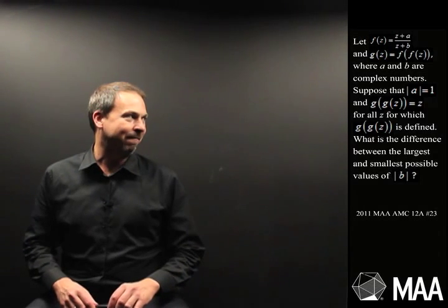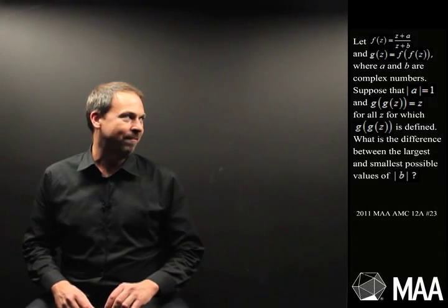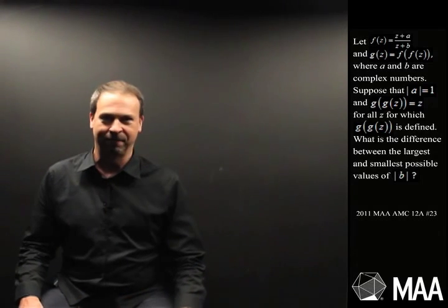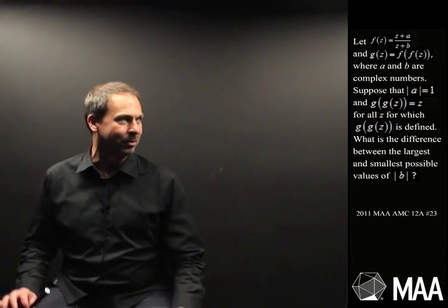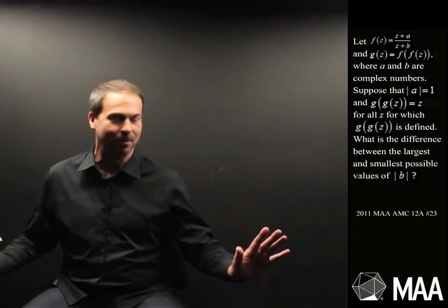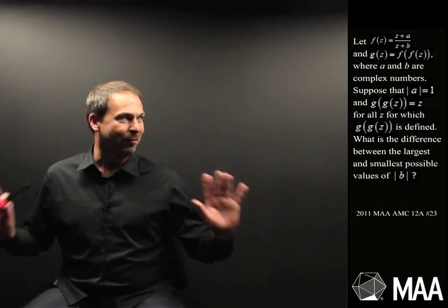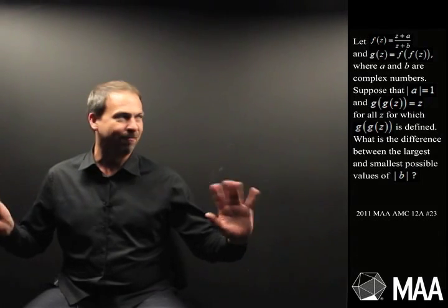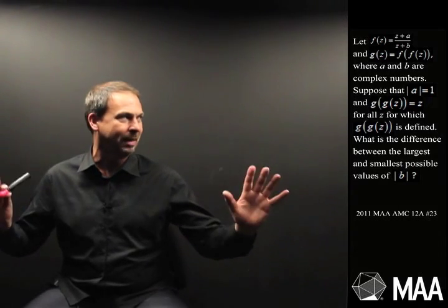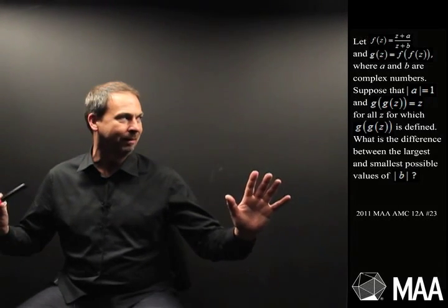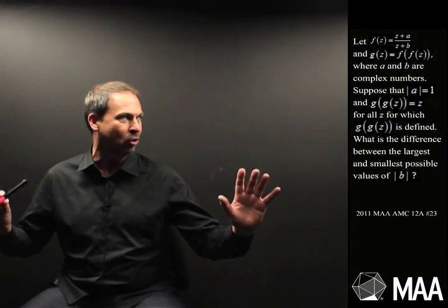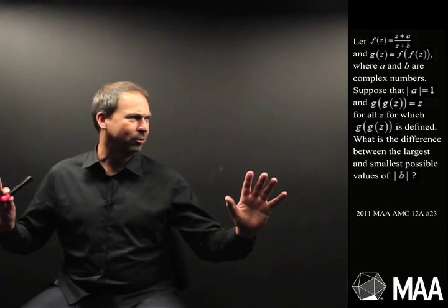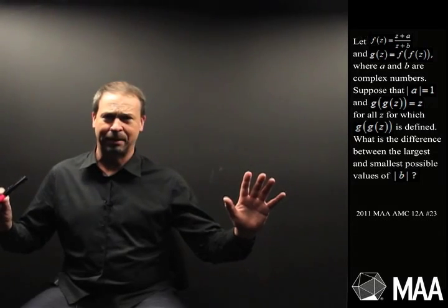So there's stuff about functions — functions composed with functions and all sorts of composition going on. There is stuff about complex numbers as well, but let me just focus on the most complicated scary stuff: g of z which is a composition of two f's, and g of g of z being z.